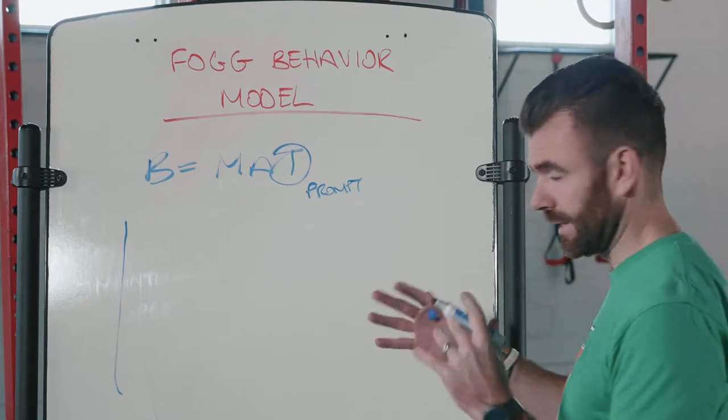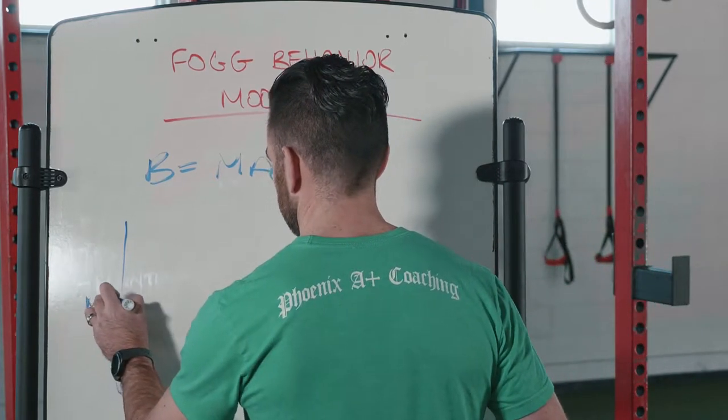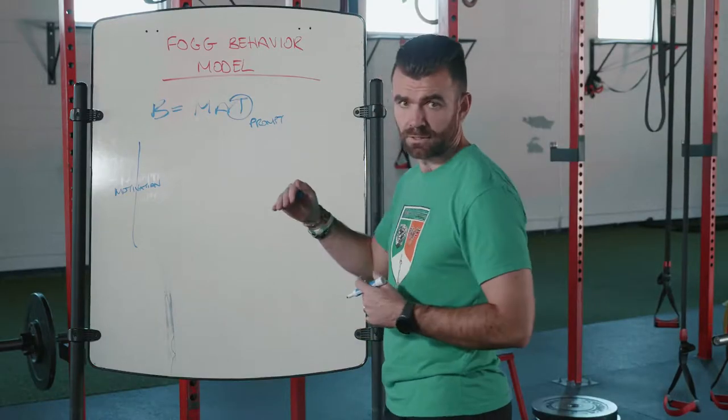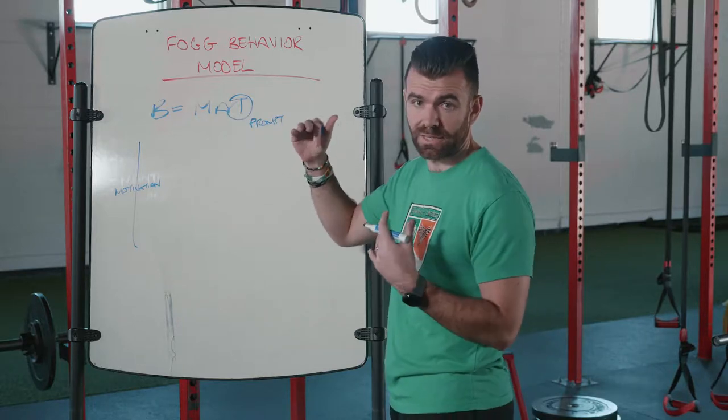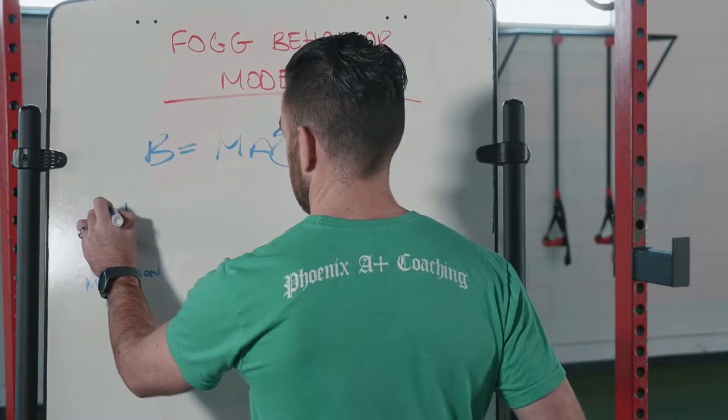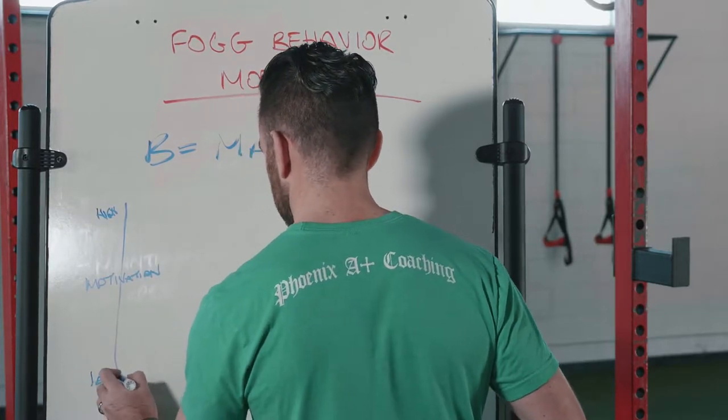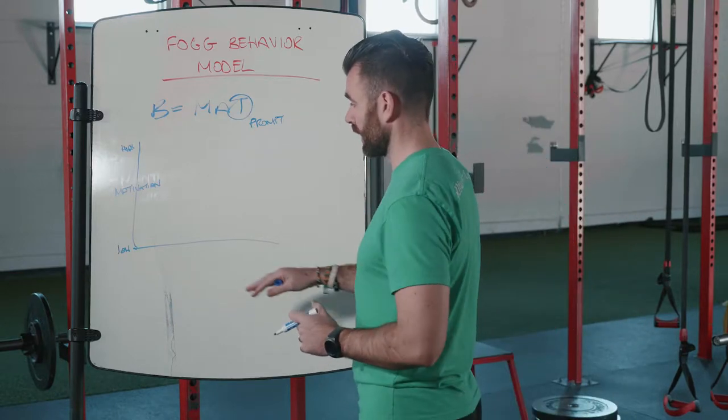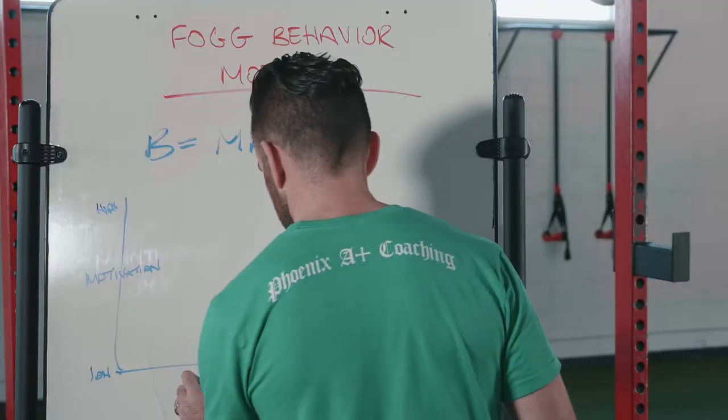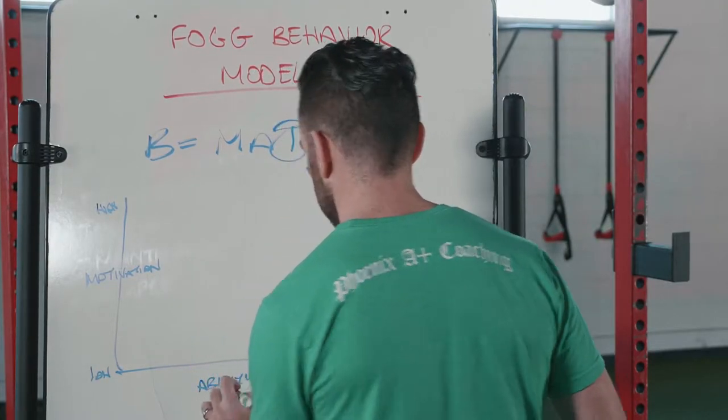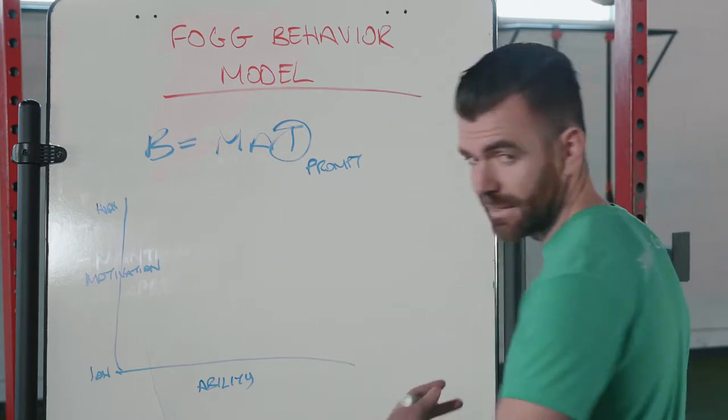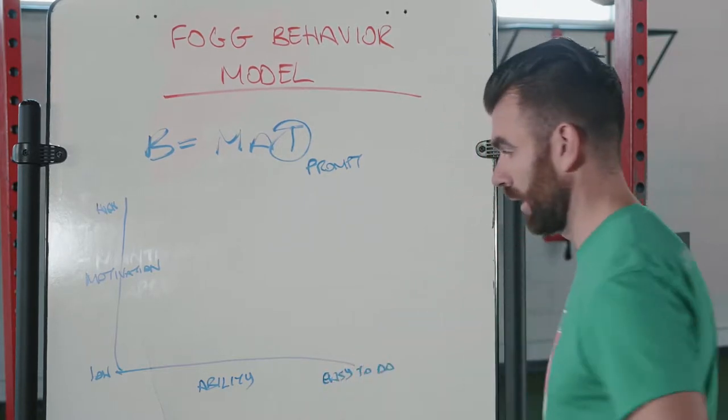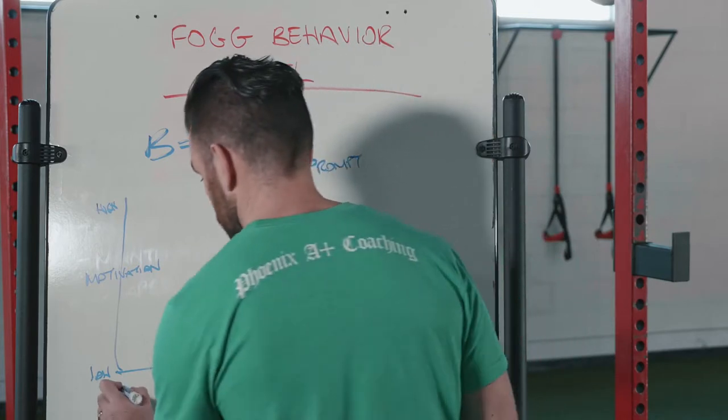So here's your motivation, and you have different levels of motivation here. You have your high and then your low. Some people will be highly motivated to do something, some people not so much. And then down here is our ability level. Are you able to do the thing? On this side, is it easy to do? And then on this side is going to be, is it difficult to do or is it hard?